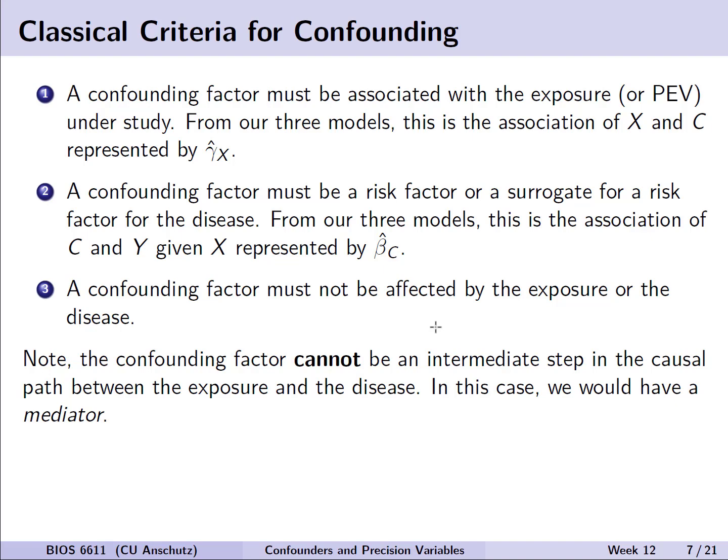The first set of criteria for confounding is the classical criteria, with three considerations. The first is that a confounding factor must be associated with the exposure, or primary explanatory variable of interest — represented by gamma hat x from our covariate model. The second criterion is that a confounding factor must be a risk factor or surrogate for a risk factor for the disease — represented by beta hat sub c from our adjusted model.